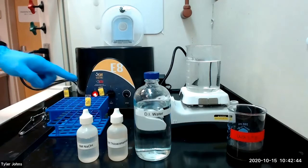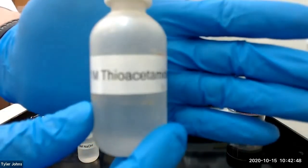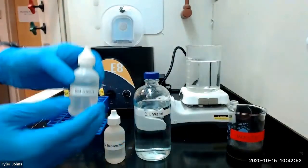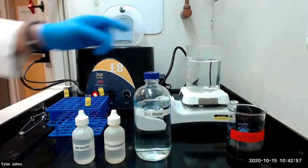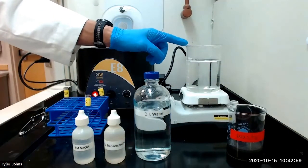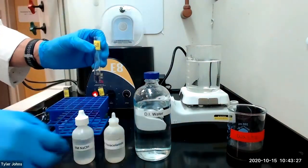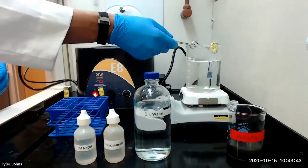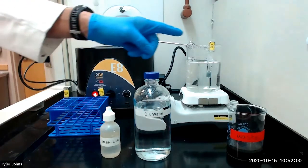To solution S11, we will add 1 drop of 1 molar thioacetamide and 1 drop of 6 molar sodium hydroxide. We will then place in a hot water bath and heat for 5 minutes. This produces sodium hydrosulfide, which ensures sufficient sulfide ion.